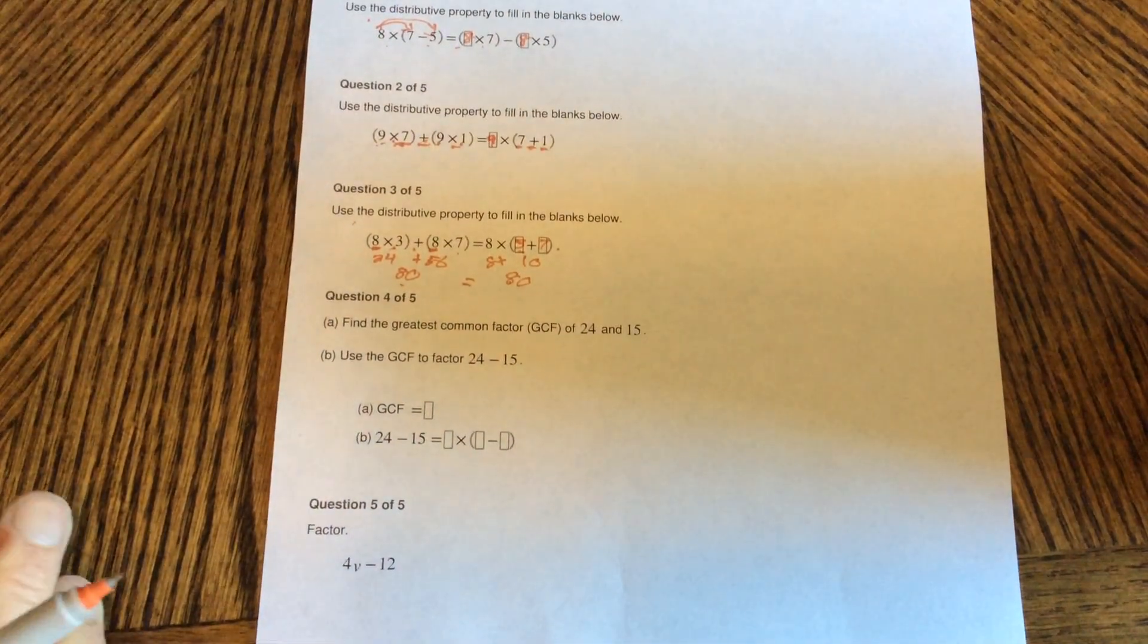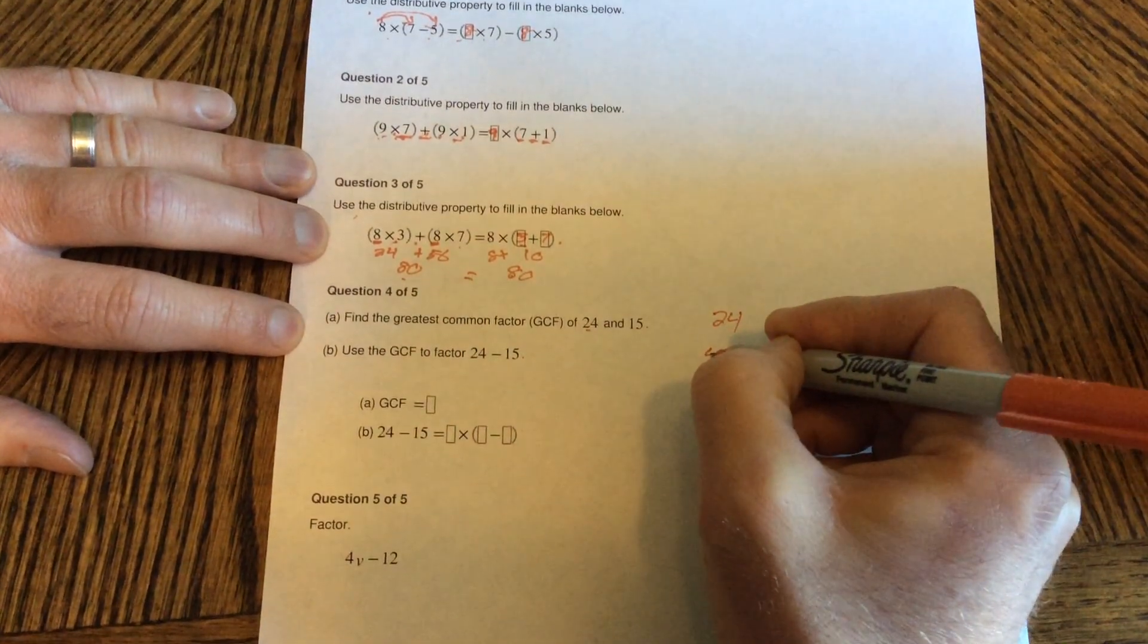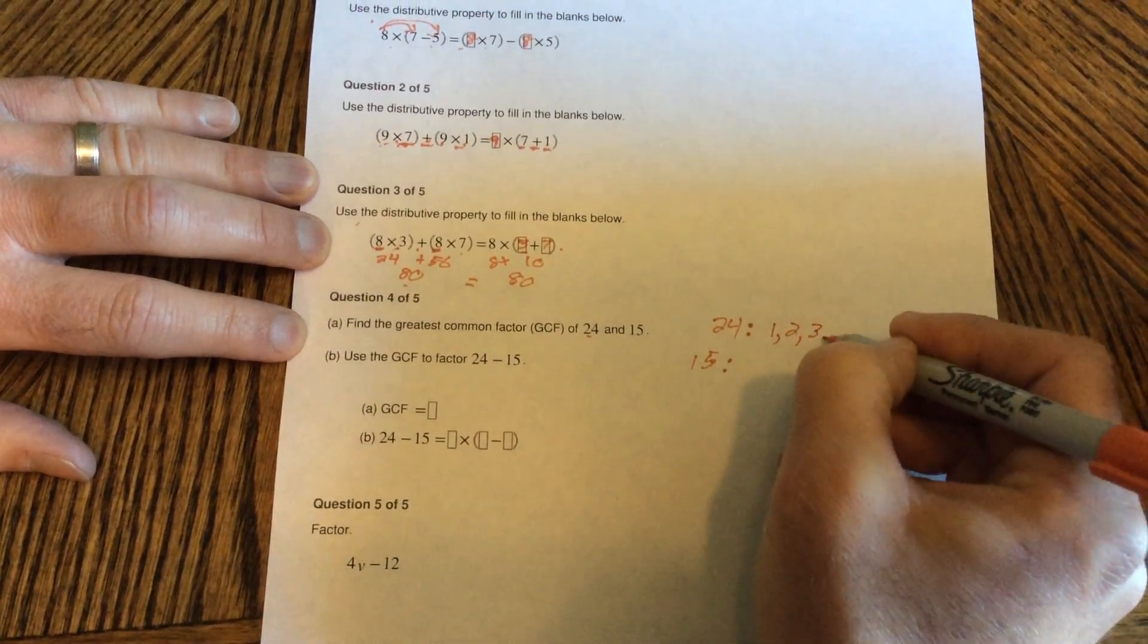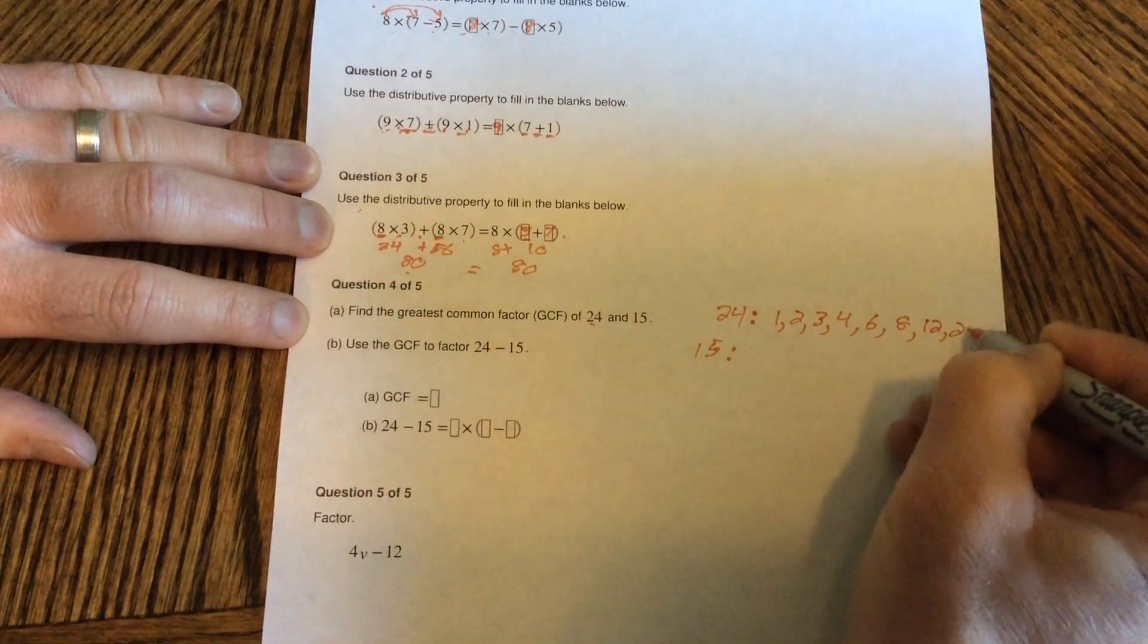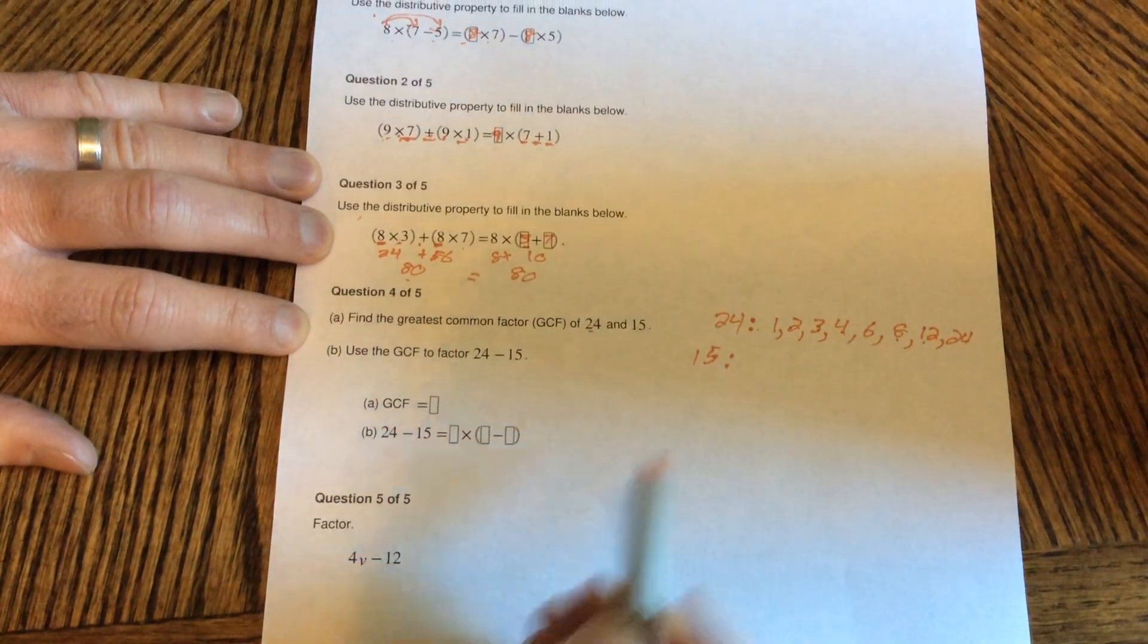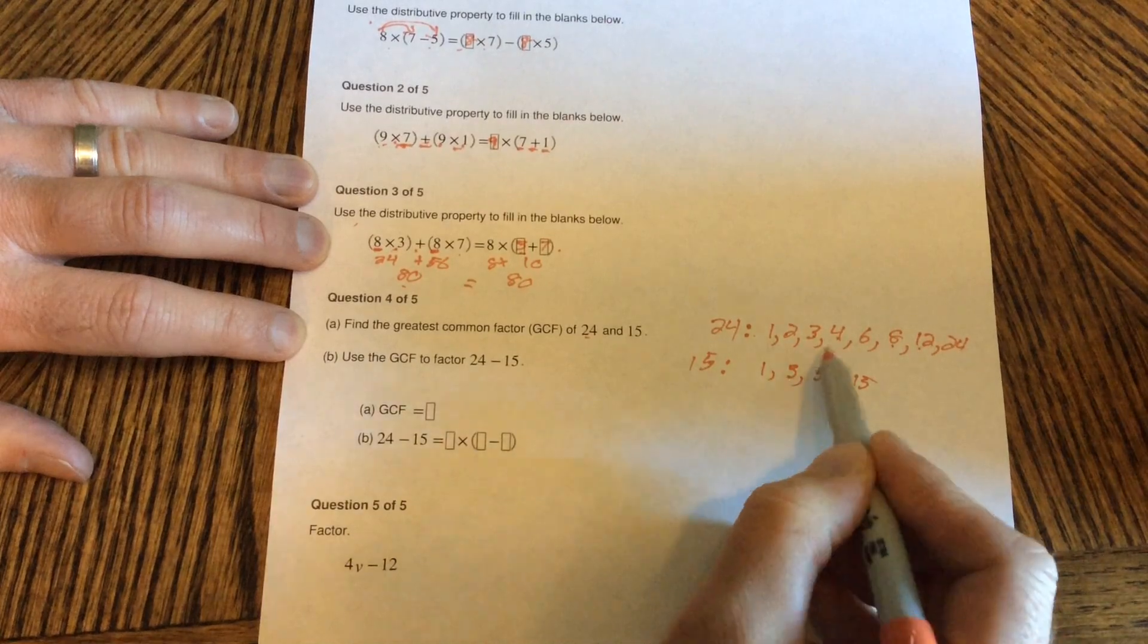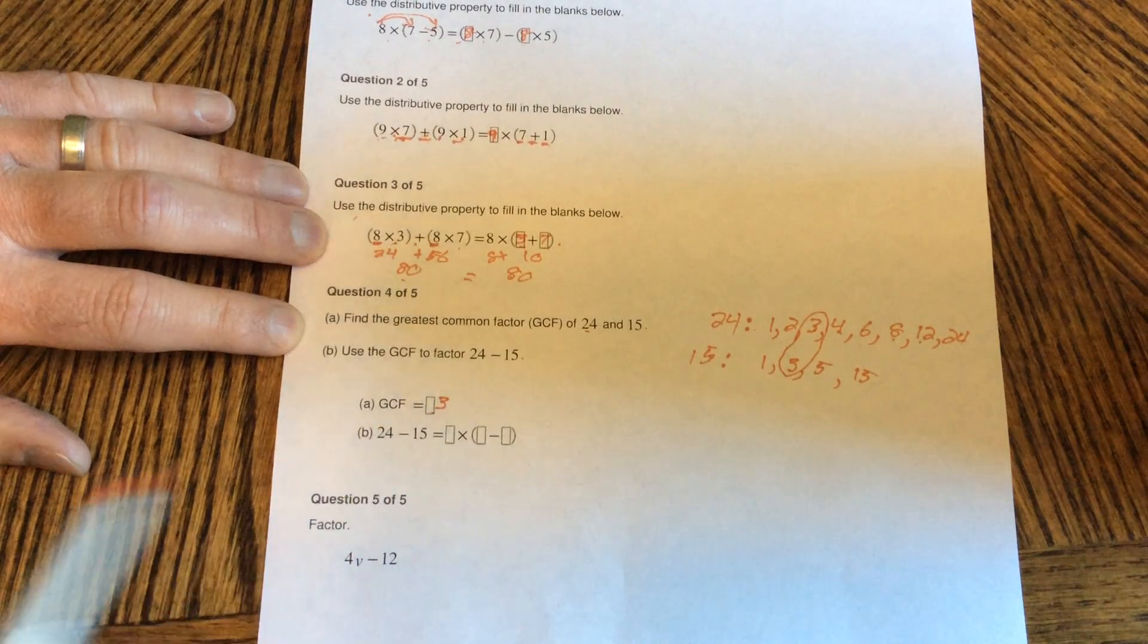Question 4. Kind of like what we did up here with the nickels. Find the greatest common factor of 24 and 15. So I can find all the factors of 24 and all the factors of 15. Or I can just think of which ones they both have in common. I'll go ahead and find all of them. There's a lot of them in 24. 1 times 24, 2 times 12, 3 times 8, 4 times 6. For 15, there aren't quite as many. 1 times 15, 3 times 5. My greatest one in common is 3. 3 is my greatest common factor. So my GCF is 3.